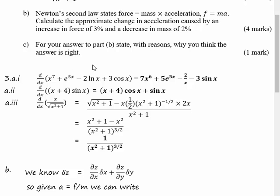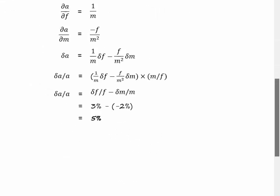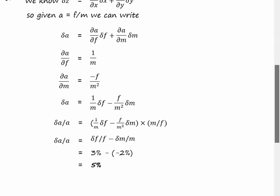State with reasons why you think your answer's right. The key thing to note here is a is equal to f over m. If f increases a will increase and if m decreases a will increase. Let's just think about that. Consider what happens to this equation when f and m vary. If f goes up a must go up if m is constant. If m decreases a is going to increase.